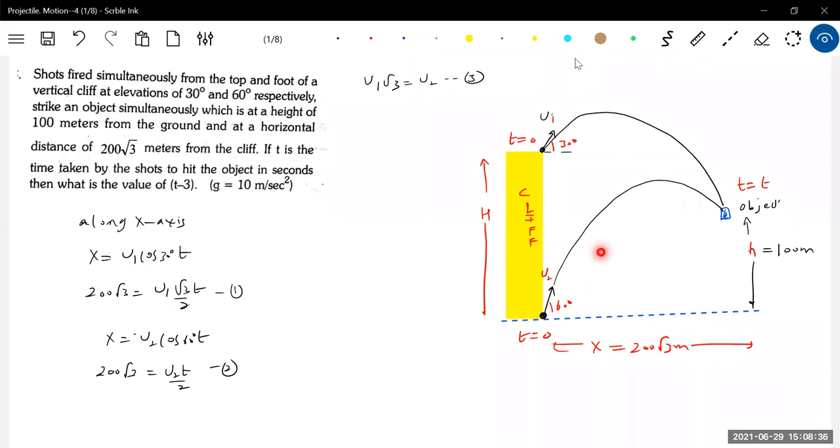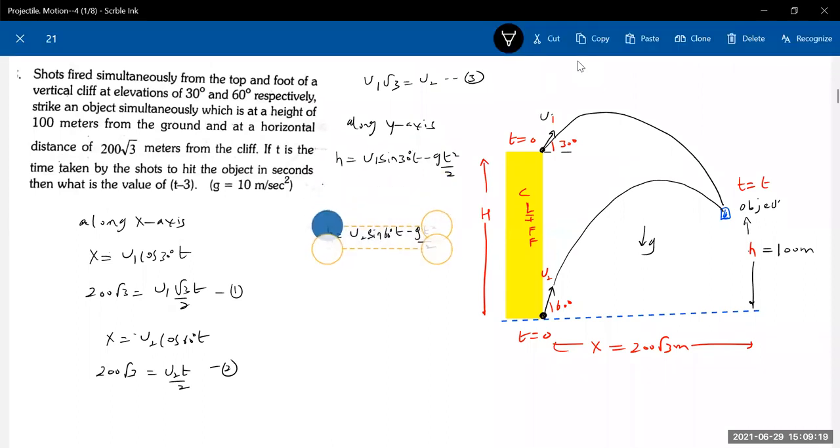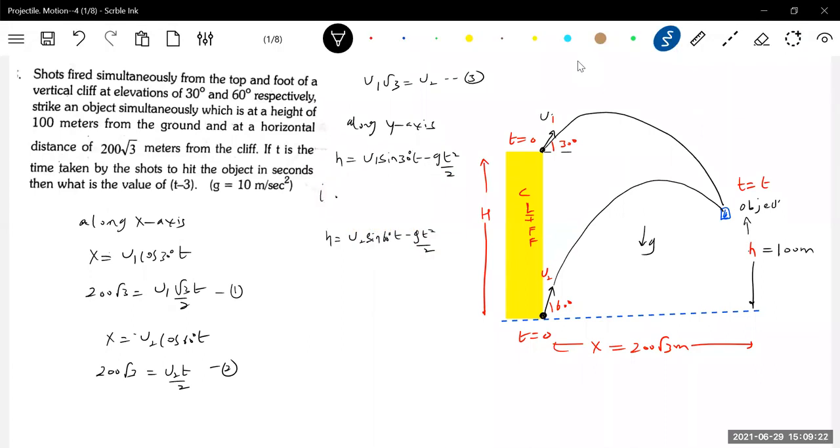Then let's write the vertical displacement along Y axis. Plus H Y plus H, U1 sine 30 degrees T minus GT square by 2. I think I can simplify this. What is H? H is 100. U1 by 2 minus 5T square. 100 equal to U2 root 3 by 2 T.